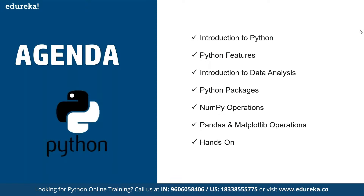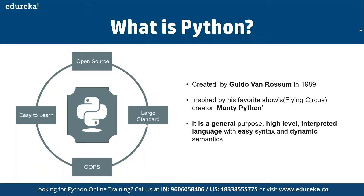Python is one of the most dynamic languages available. It is used for different requirements — web development, web scraping, and it is one of the main drivers in machine learning and data science. There are multiple advantages: Python is an open source, high-level, object-oriented language that is easy to learn due to its minimal syntax compared to other languages.